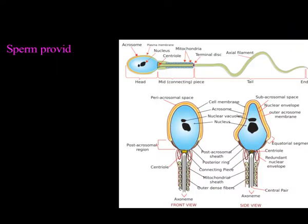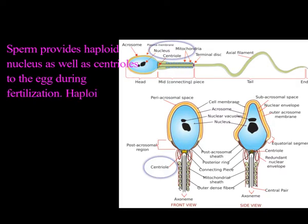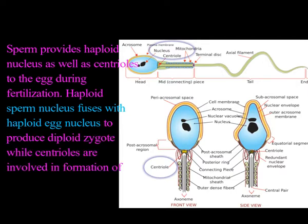The sperms provide a haploid nucleus as well as centrioles to the egg during fertilization. The haploid sperm nucleus fuses with the haploid egg nucleus to produce a diploid zygote, while centrioles are involved in the formation of the spindle apparatus.